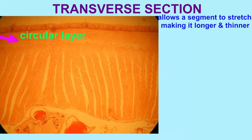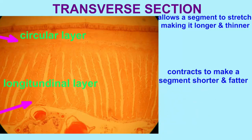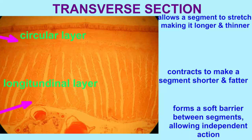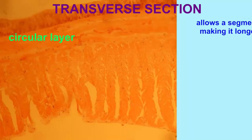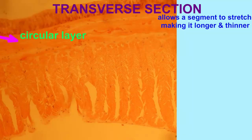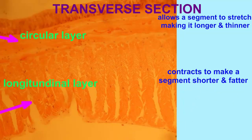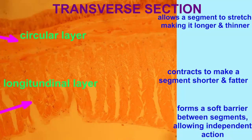In transverse sections across the earthworm's body, creating a front and a back, one can see the circular muscles running around a segment and a section through the longitudinal layer. Note that these two layers look different in the longitudinal and transverse sections.